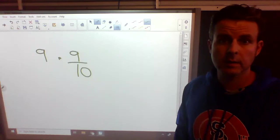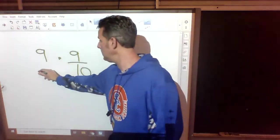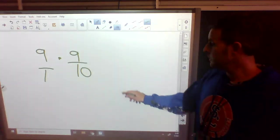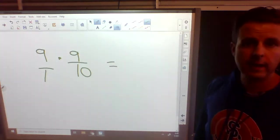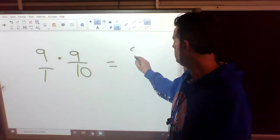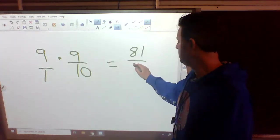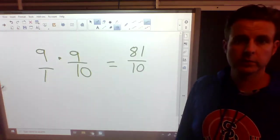We can take a fraction times a fraction. We have to turn our whole number into a fraction. You turn a whole number into a fraction by putting it over 1. That's it. Now we multiply the top times the top. The bottom times the bottom. 9 times 9. 81. 1 times 10. 10.